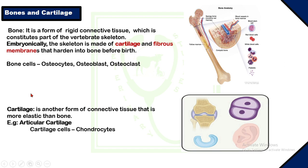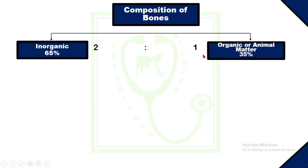Cartilage is another form of connective tissue that is more elastic than bone. Its elasticity makes it a more flexible portion of the skeleton — for example, articular cartilage found in the joints. The cells of cartilage are called chondrocytes.